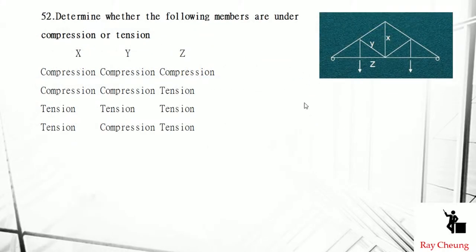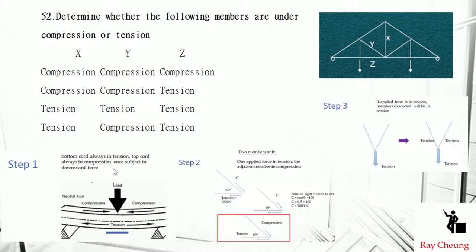The second one: if you understand the three simple steps to analyze a typical truss, you will understand how to do it. First of all, you need to remember — most likely if the loading is going downward, the bottom element should be in tension and the top one should be in compression.